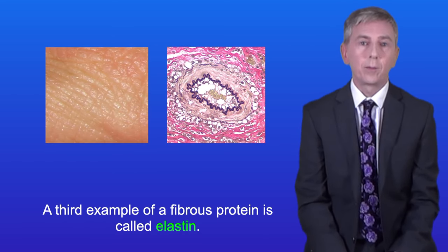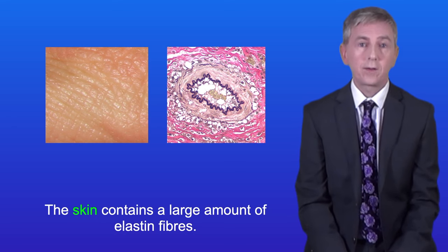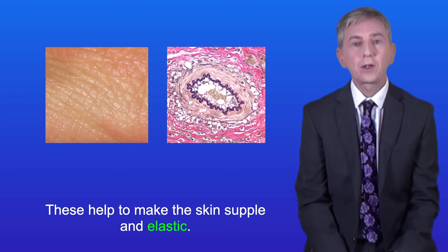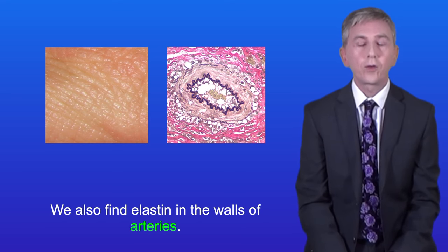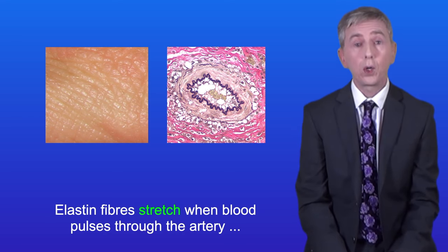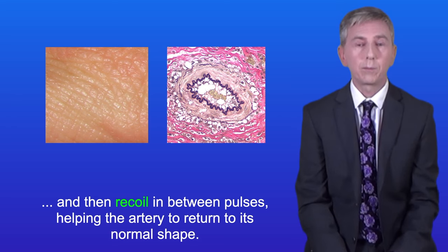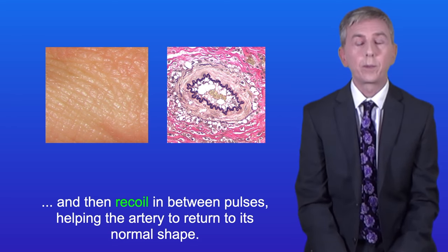A third example of a fibrous protein is elastin. The skin contains a large amount of elastin fibers, and these help to make the skin supple and elastic. We also find elastin in the walls of arteries. Elastin fibers stretch when blood pulses through the artery and then recoil in between pulses, helping the artery to return to its normal shape.